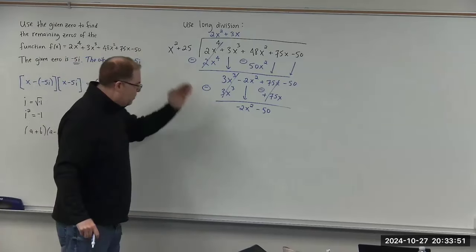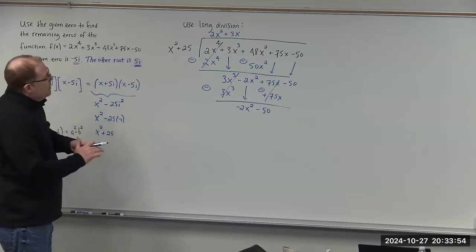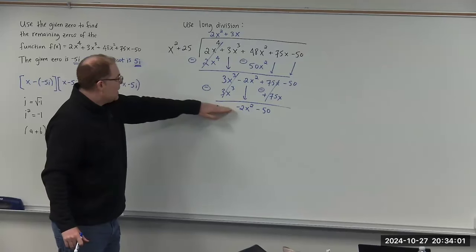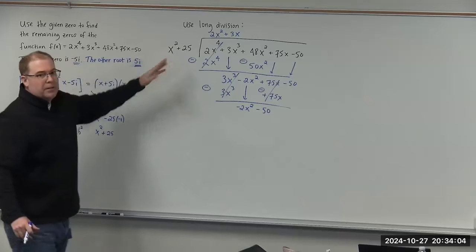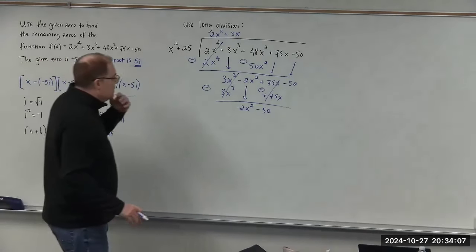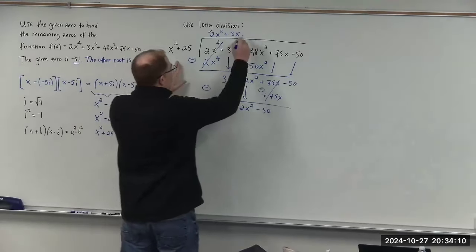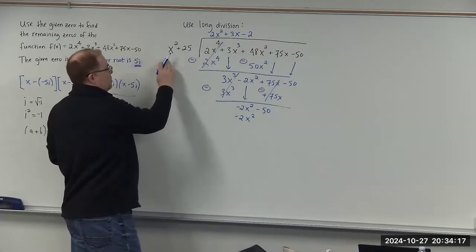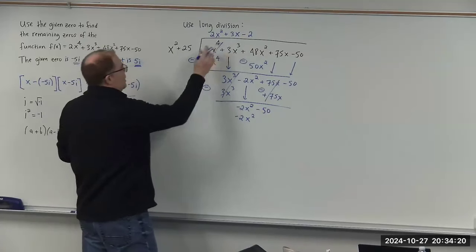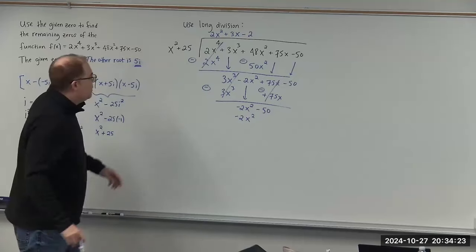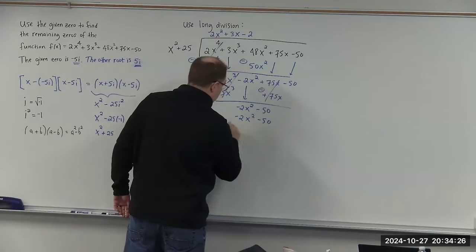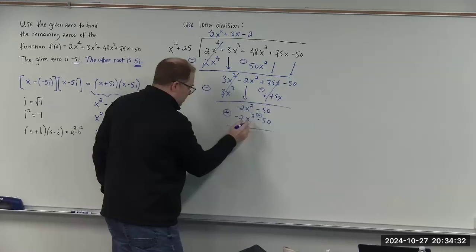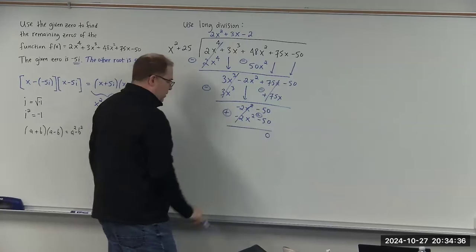We continue because the rule is: stop only when the degree of the remainder is less than the degree of the divisor. We have negative 2x squared remaining, so we multiply negative 2 times x squared to get negative 2x squared, and negative 2 times positive 25 to get negative 50. We change the sign, so negative 50 plus 50 is 0, and we get 0 remainder as well.